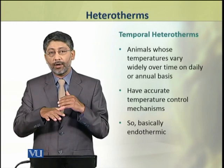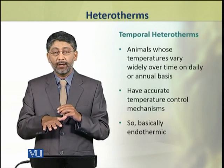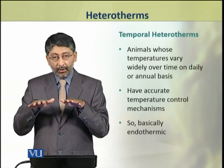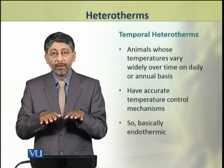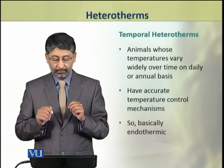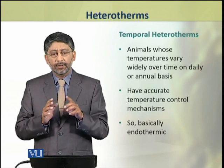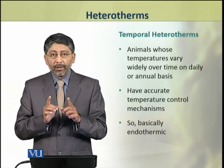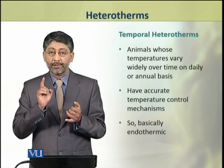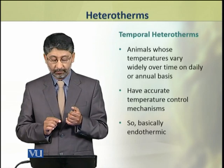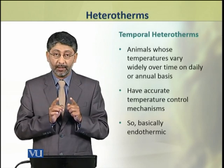Mukhtlif uqat mein in ki bodies ke temperatures mukhtlif hotte hain — be shak woh ruzanna ki timing ho ya woh annual basis ke oopar seasonal timing ho. These animals, that is temporal heterotherms, have accurate controls on their body temperatures, so basically they are endotherms.